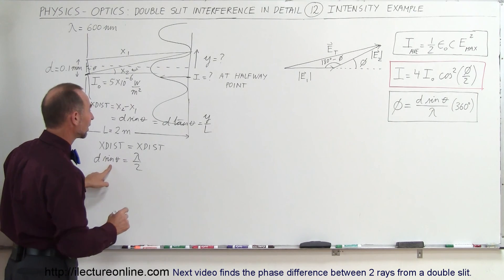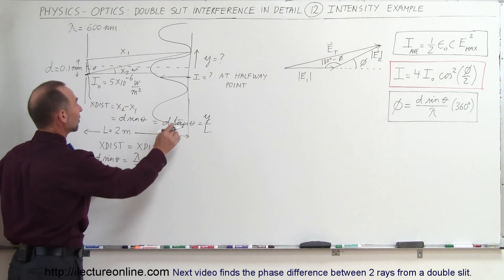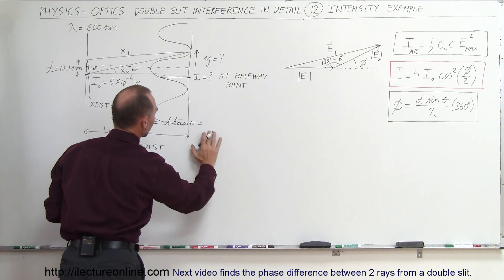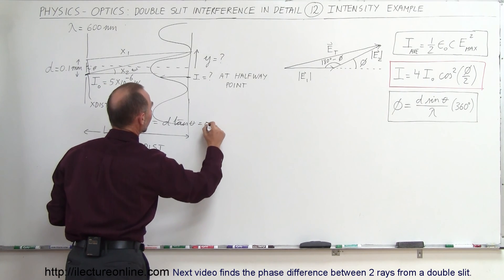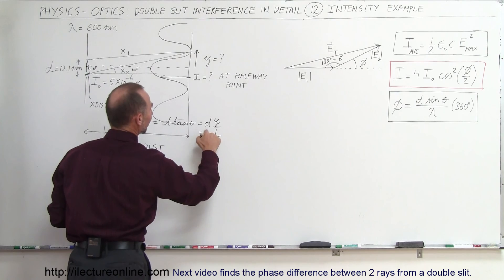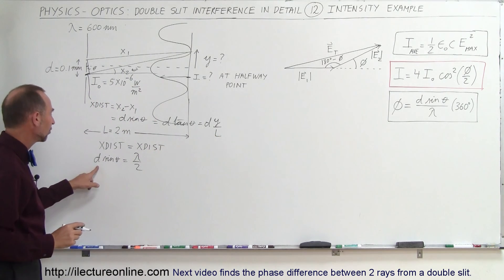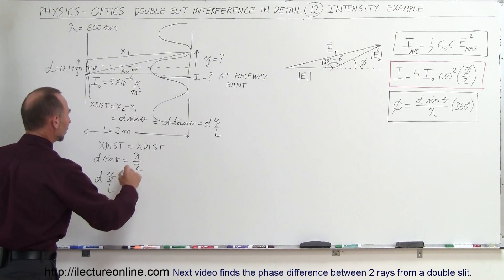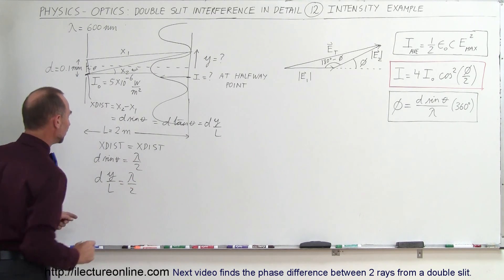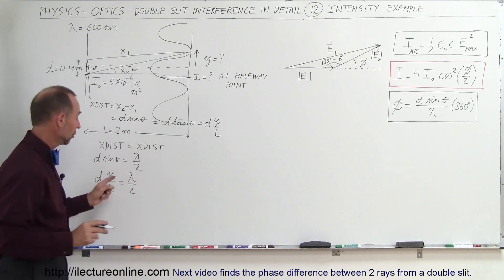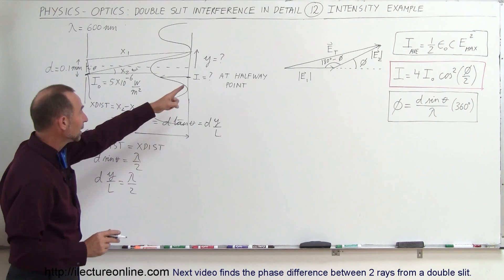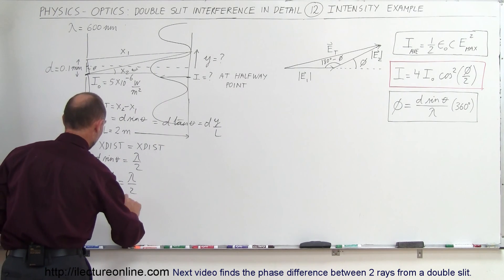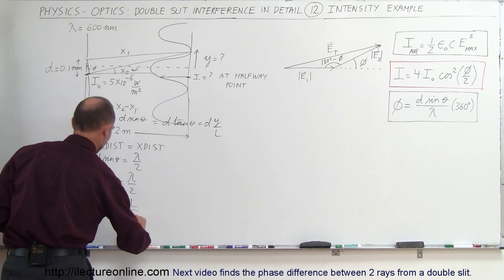Since d sine theta can be written as d times tangent of theta — let me correct this — this is not y over l, but d times y over l. I forgot the d in there. So the extra distance traveled will be d times y over l, which is equal to lambda divided by 2. This equation we can solve for y. Therefore, y will be equal to lambda times l divided by 2 times d.